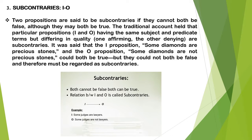Subcontraries: this opposition holds between propositions I and O. This is just the flip side of the contrary relationship which holds between A and E. There we saw that both cannot be true together, but both can be false. In the subcontrary relationship between I and O, both cannot be false together, but both can be true. For example, 'Some apples are green' and 'Some apples are not green' — both can be true together, but both cannot be false at the same time. This type of relationship between I and O is described as subcontrary.